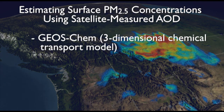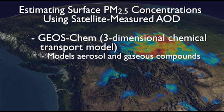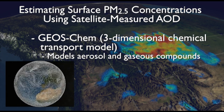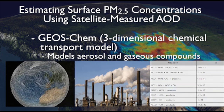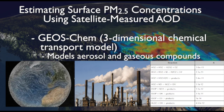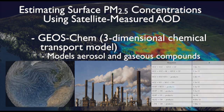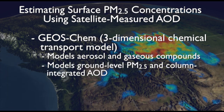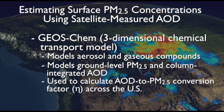GEOS-Chem models time and space-varying aerosol and gaseous compounds using meteorological data sets, emissions inventories, and equations that represent atmospheric physics and chemistry. GEOS-Chem models both ground-level PM2.5 concentrations and column-integrated AOD. The model is used to calculate the AOD to PM2.5 conversion factor, ETA, for every location across the U.S.